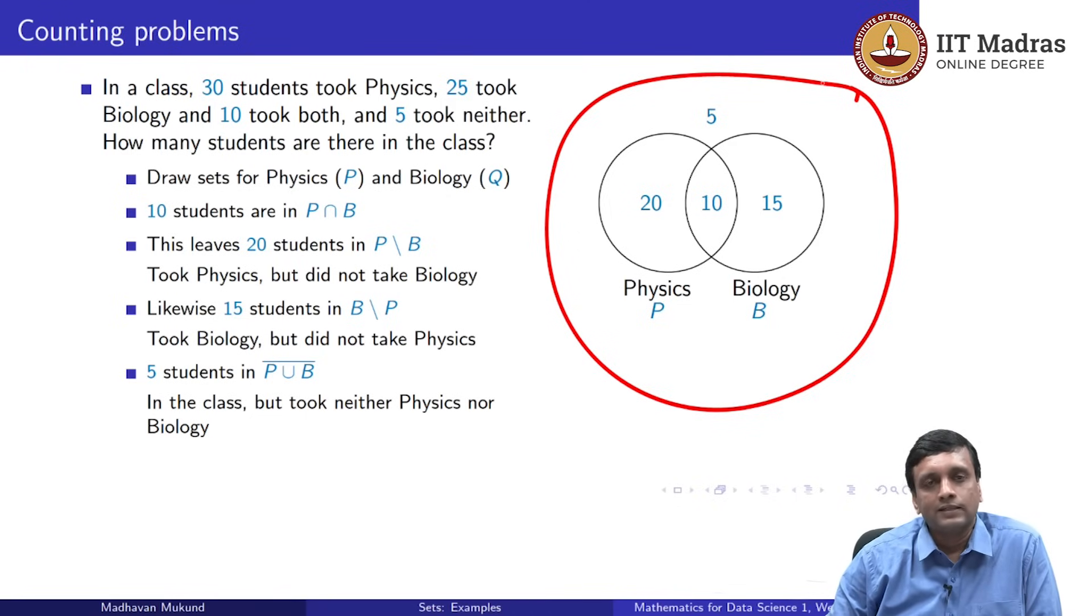Totally from this, we can see that there are four regions of interest. We have the P minus B region, physics, but not biology. We have the B minus P region, biology, but not physics. We have the P intersection B region taking both. And we have the complement taking neither. And these are all disjoint from each other.